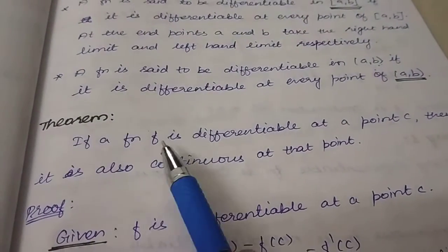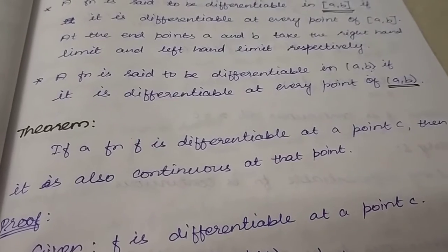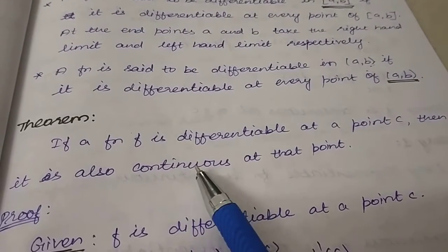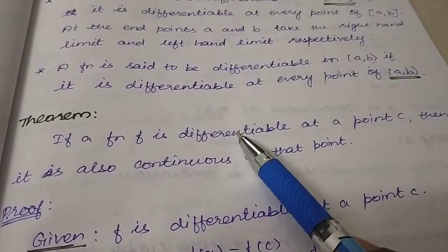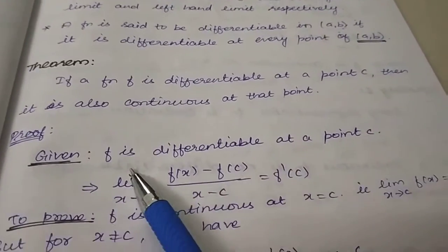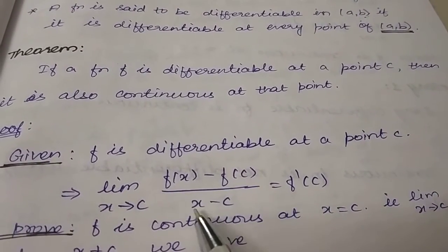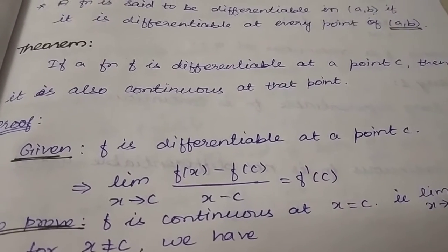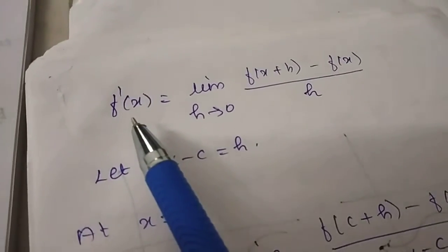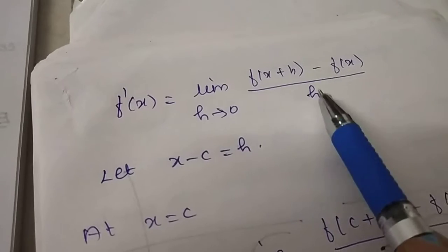Let us see a theorem: if a function f is differentiable at a point c, then it is also continuous at that point. So differentiability implies continuity. We need to prove this. Given that f is differentiable at point c, from the definition of derivative: f'(x) = limit as h→0 of [f(x+h) − f(x)] / h.